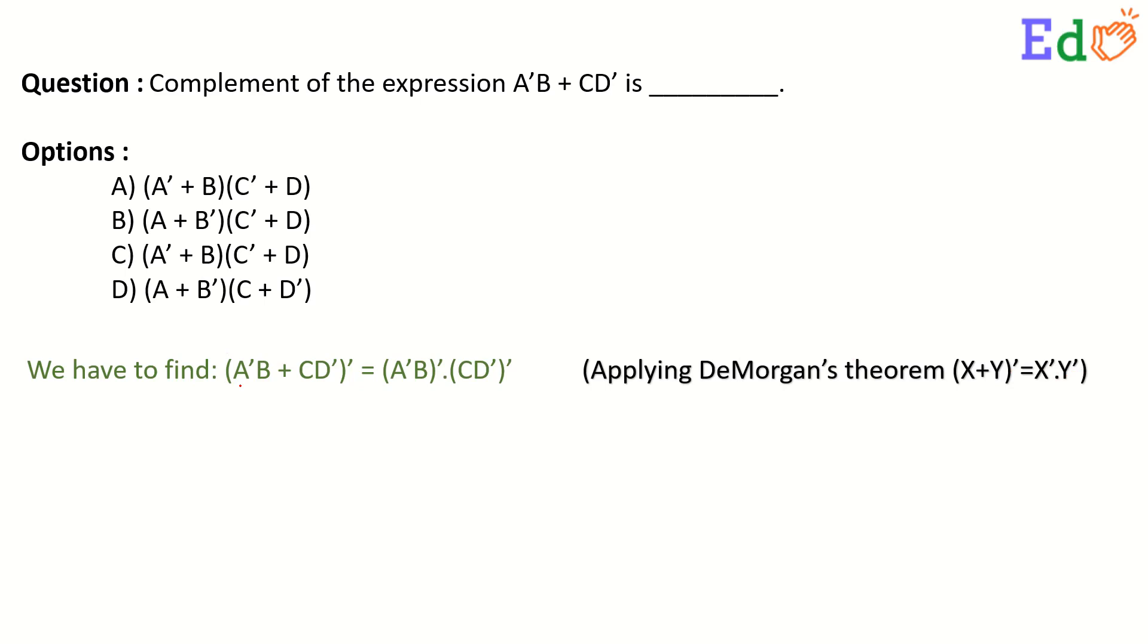If we write it here, if this is X and this is Y, then X plus Y whole complement is X complement dot Y complement. So, A dash B whole complement and CD dash whole complement.